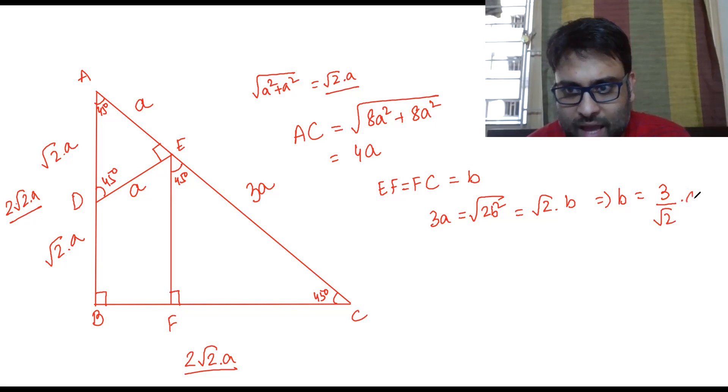So this is 3 by root 2 times a, and FC is also 3 by root 2 times a. Now what are we supposed to find? We're supposed to find FC by BC.